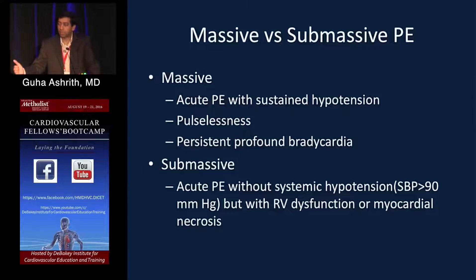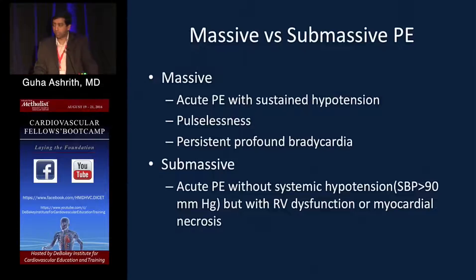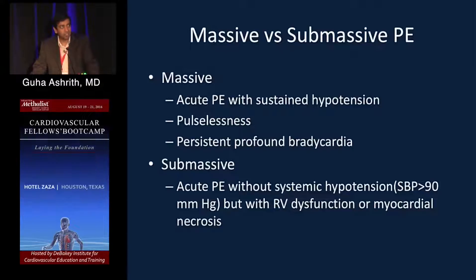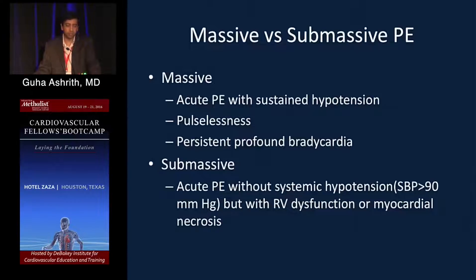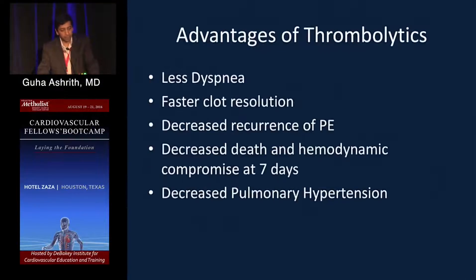RV dysfunction for most trials is defined by an RV-to-LV ratio greater than 0.9 on echo. BNP cutoff is 150 for several trials; NT-proBNP cutoff is over 500 for most trials. Any troponin elevation also qualifies. If BNP, troponin, or RV:LV ratio greater than 0.9 is present without hypotension, it's classified as submassive PE.